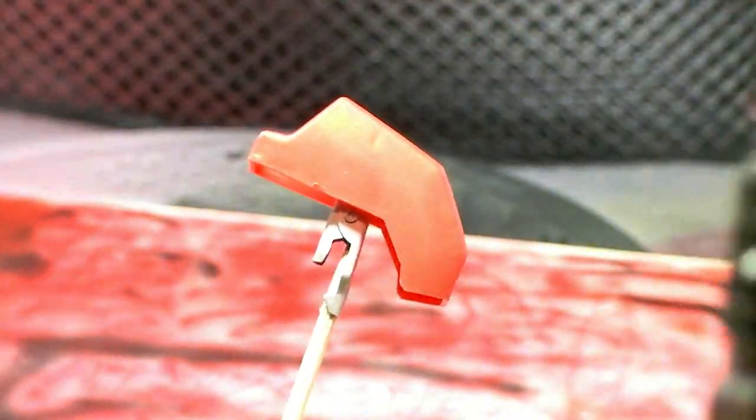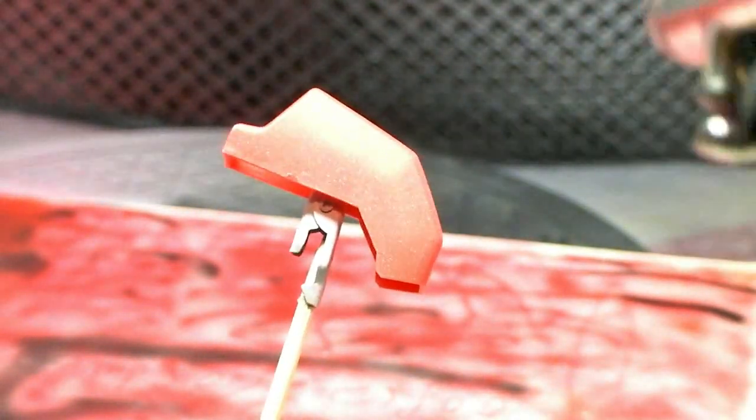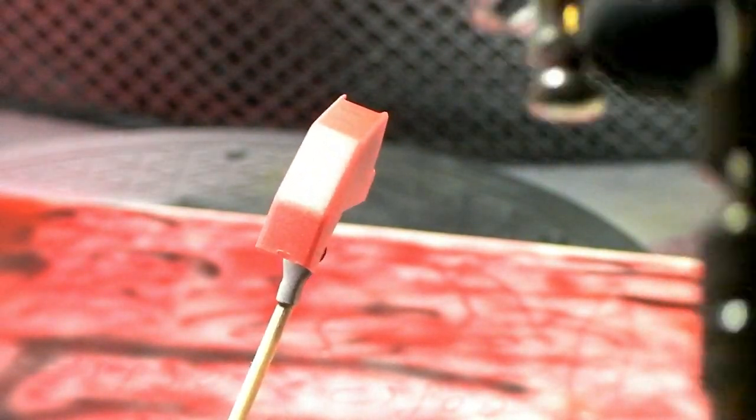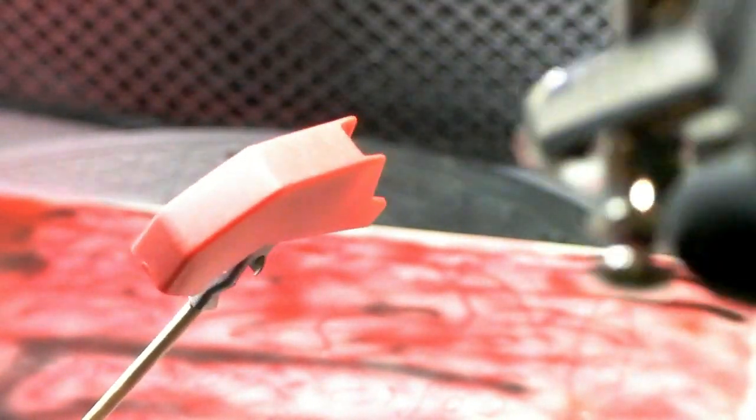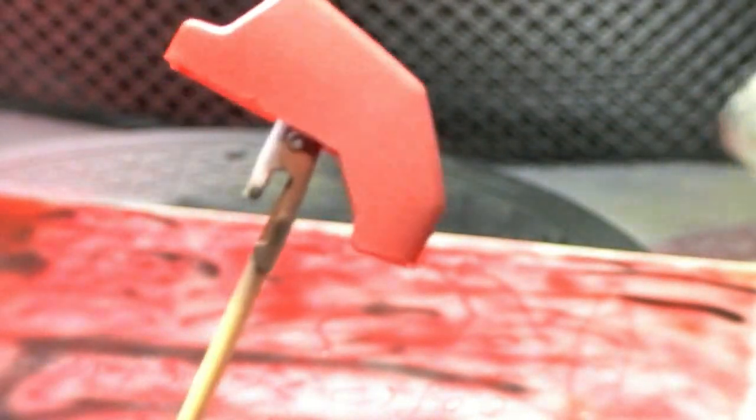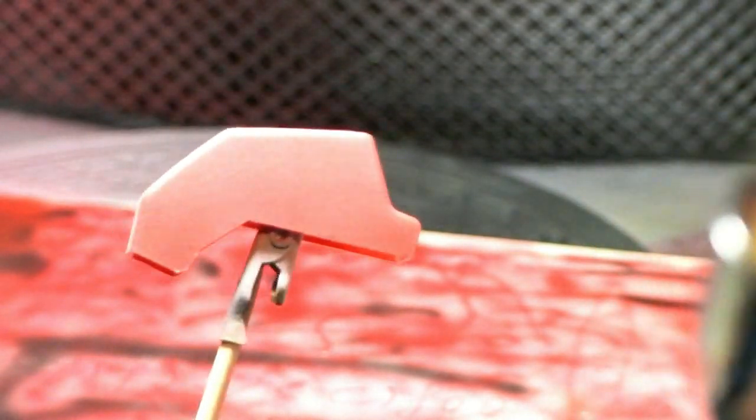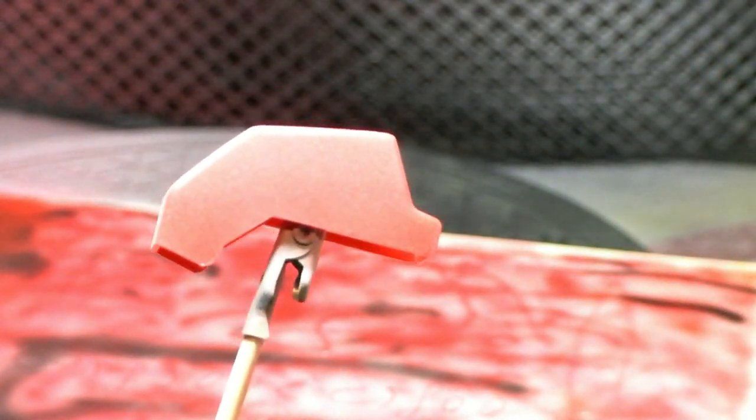You just dust on a first initial layer like this, and do that all around. I'm barely pulling back on the trigger, by the way—just ever so slightly on the trigger—and that gives you your initial coat, which is basically like a key-in coat. It just gives something for the rest of the paint to grip onto.